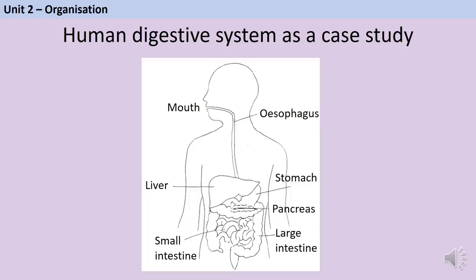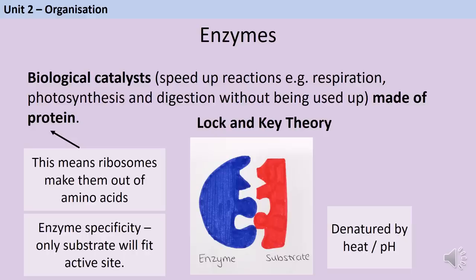Use the human digestive system as a case study for an organ system. Label the mouth, oesophagus, stomach, small and large intestines, liver and pancreas. The purpose of digestion is to turn large, insoluble food molecules into smaller, soluble food molecules that can be absorbed through the small intestine. Enzymes are biological catalysts — molecules that speed up reactions like respiration, photosynthesis and digestion without being used up or changed. They're made of protein, so any cell making enzymes will contain lots of ribosomes. Each enzyme is specific — its active site fits exactly the shape of its substrate — and can be denatured by extremes of temperature or pH.